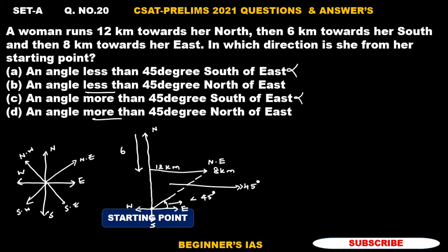Always remember that the angle opposite to the largest side is always greater. Here the largest side determines this angle. This angle is less than 45 degrees, therefore the answer for this question is: the angle is less than 45 degrees — north of east. With this I am concluding this session. Thank you all, have a good day.